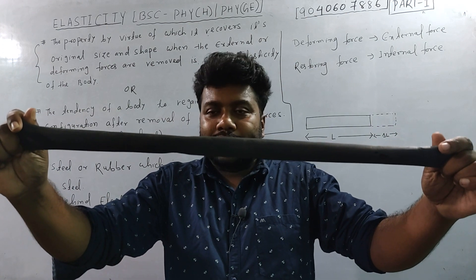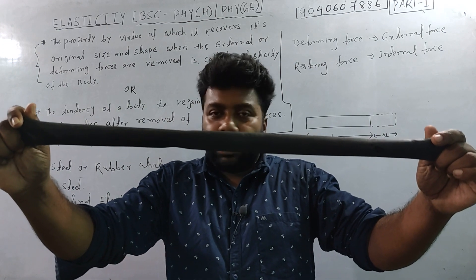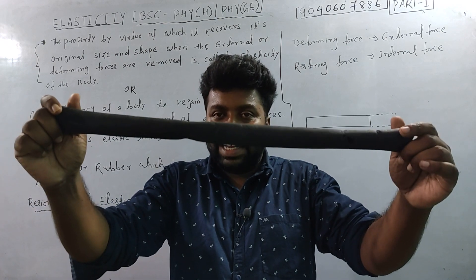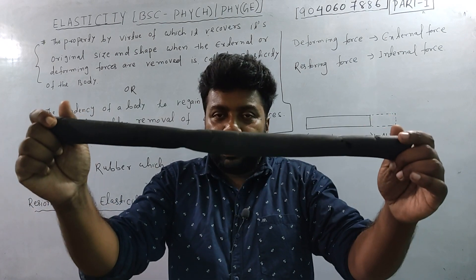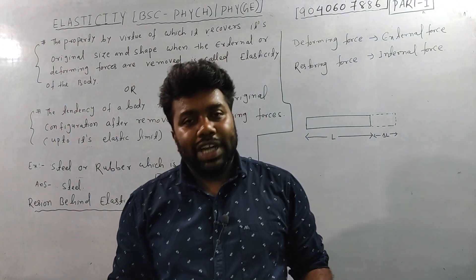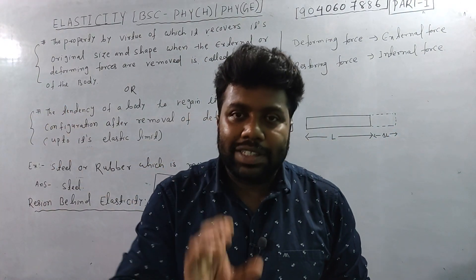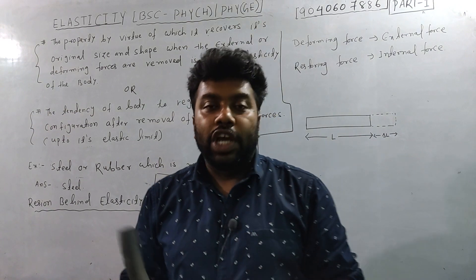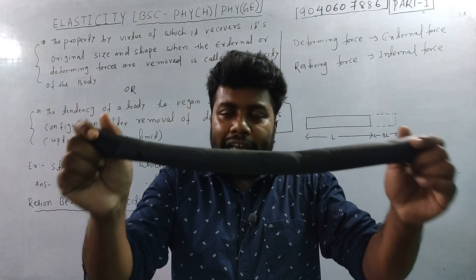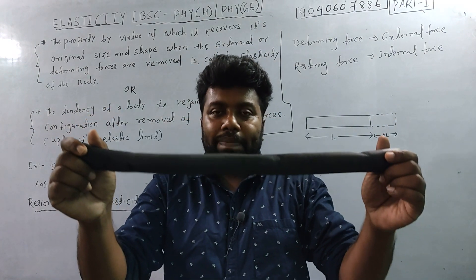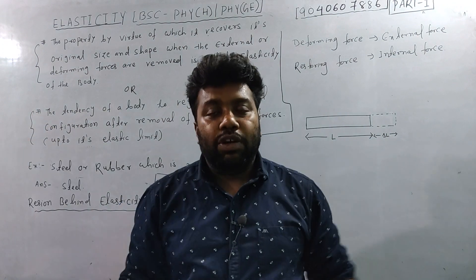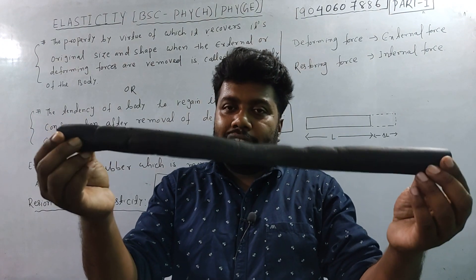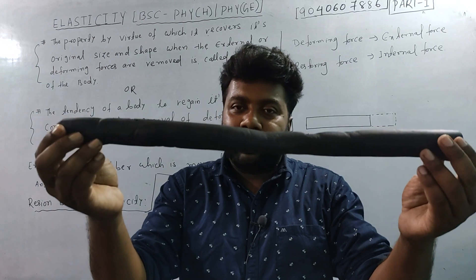So when the force is applied as an external deforming force, the actual length or shape of the body changes. When the force is released, the body tends to return to its original shape. That original shape recovery is due to the restraining force. The external force is the deforming force, and this restoring tendency is the basis of elasticity.